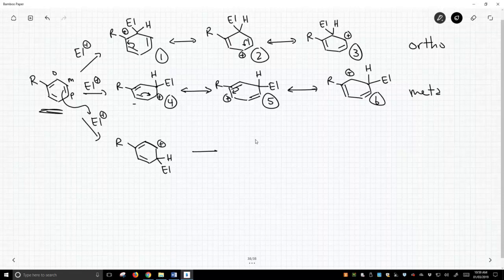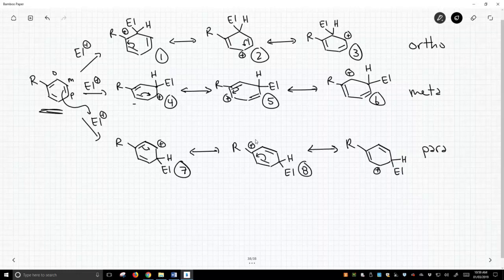This is now going to have multiple resonance forms. We'll draw those, move that pi bond. H, electrophile. These are the ones that lead to the para product. Let's number these: seven, eight, nine.